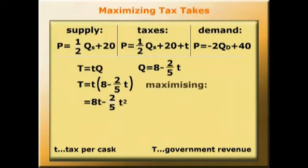Now because we're interested in maximizing government revenue, we need to find where dT/dt = 0. 8 - 4/5 t = 0, so t = 10.